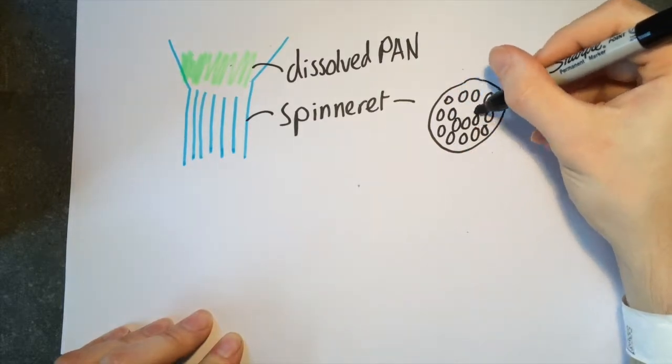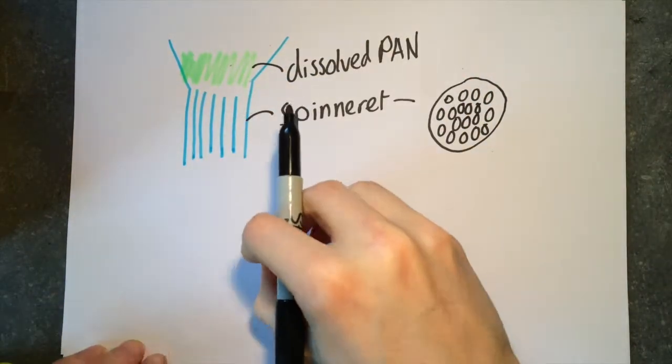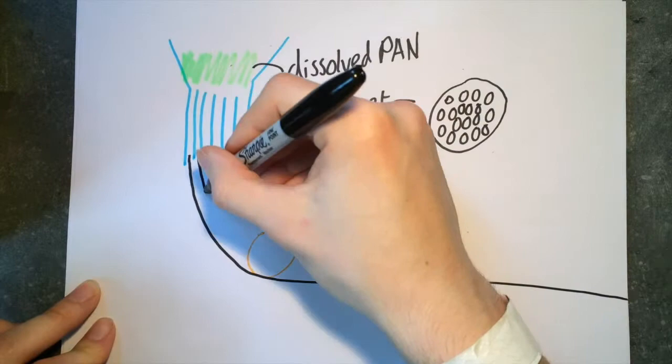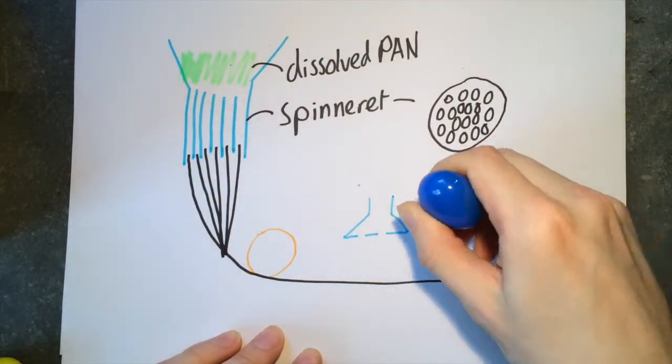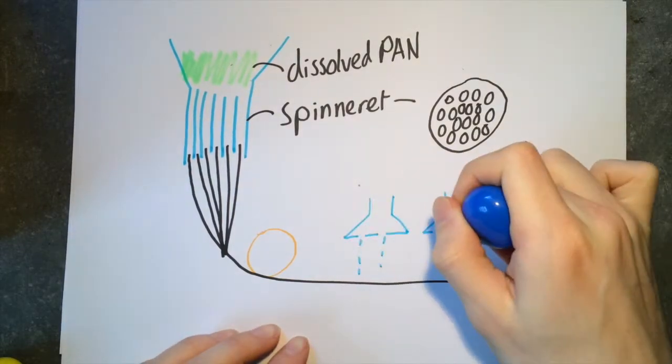The PAN fibers themselves are formed via wet spinning. The PAN is placed into a bath containing spinnerets made of precious metals, almost like a shower head. The number of holes depends on the final spec of the fiber.